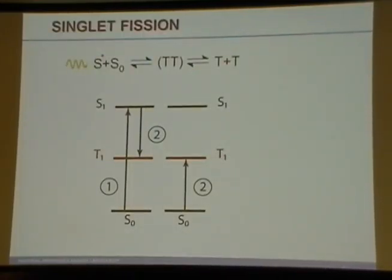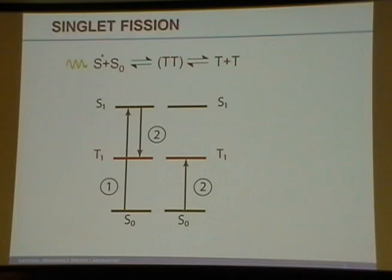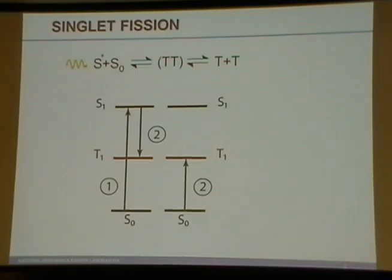The definition: if you excite a molecule with one photon into a singlet excited state — S* as I'm showing here — it can give up some of its energy to a neighboring chromophore in its ground state. If it does so in just the right way, it can create a state that is essentially a combination of two triplets. Those two triplets can potentially go back and reform a singlet, or they can go forward and form two totally independent triplets. Pictorially: one photon in, exciting a molecule out of its ground state into a singlet excited state, it gives up some energy to a neighboring chromophore, and both molecules end up in the triplet state.